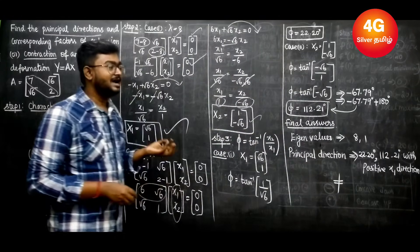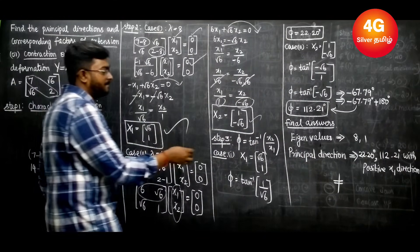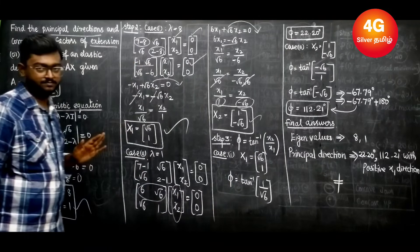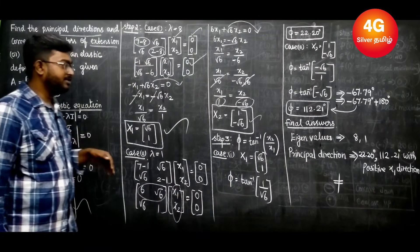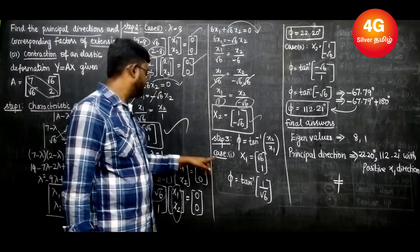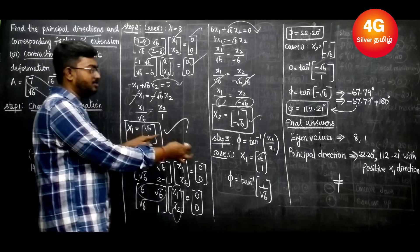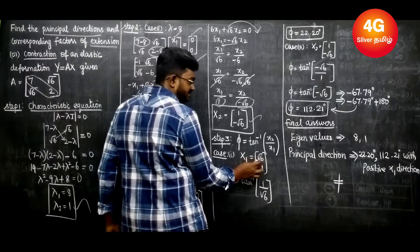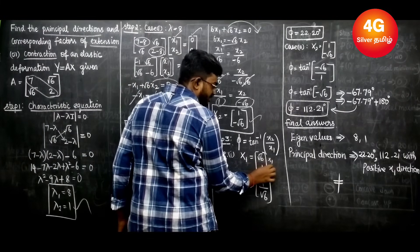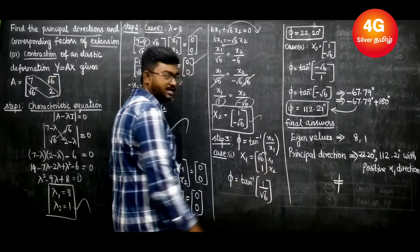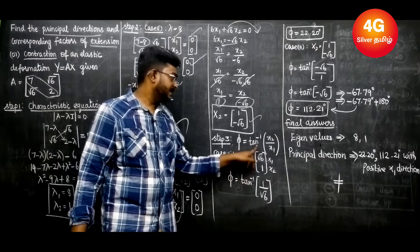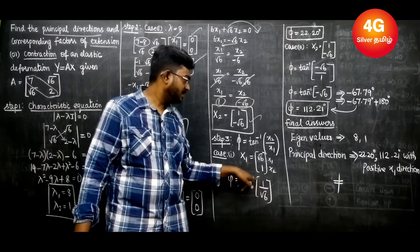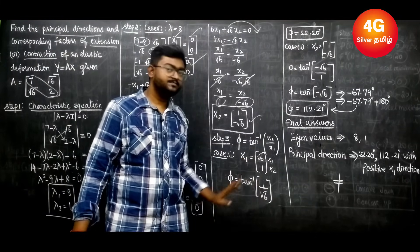Now, the principal direction angle is given by the formula: φ = tan⁻¹(x2/x1). There are two cases. For Case 1, x1 = √6 and x2 = 1. So φ = tan⁻¹(1/√6).